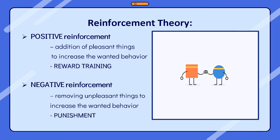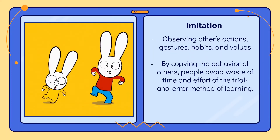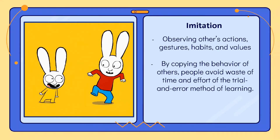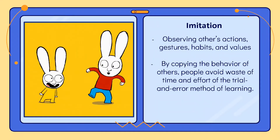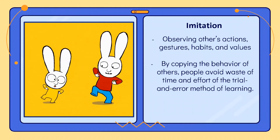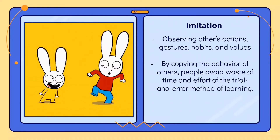The third form of learning is learning by imitation. It is the simplest method of learning. Many of our daily activities are learned by imitating others — for example, the way we eat, drink, walk, talk, and dress are all learned by imitation. We observe what and how other people do certain activities and imitate them. We observe demonstrations given by an expert, imitate his movements, and learn them. By copying others' behavior, people avoid the waste of time and effort of trial and error.